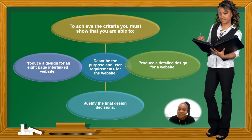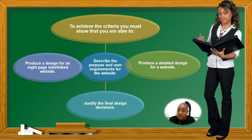To achieve the criteria, you must show that you are able to produce a design for an eight-page interlinked website, describe the purpose and user requirements for the website, produce the detailed design for a website, and finally you need to justify the final decisions.